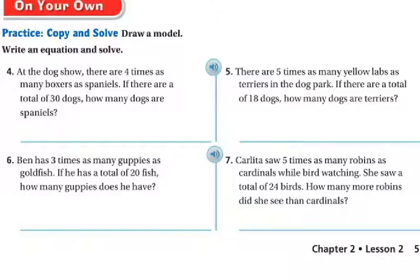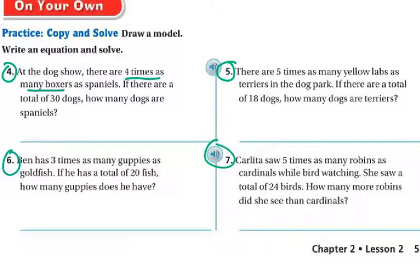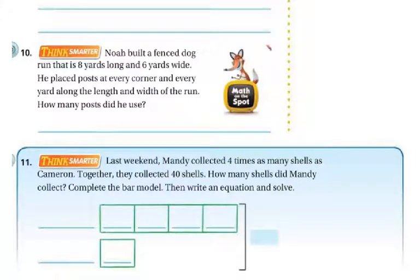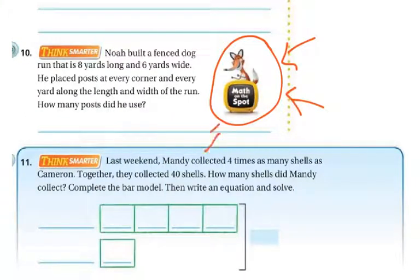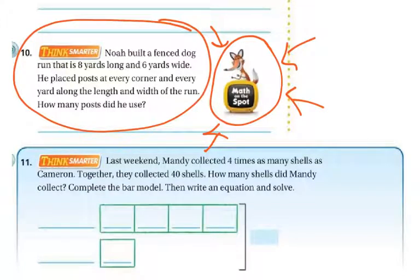Now I'm going to ask you to do four problems on your own. You can use your scrap journals and make models to help you, then write your equations — whatever helps you physically see it. Remember to break the problems apart and underline what you know, like 'four times as many boxers as spaniels, with a total of 30 dogs.' When you finish those four problems, go to Math on the Spot in Think Central, watch the video, and do number 10. Then answer the problems in Think Central as we always do. If you need me, I'll be on the carpet. Good luck.